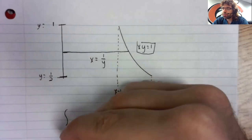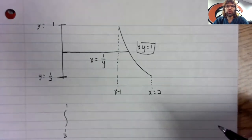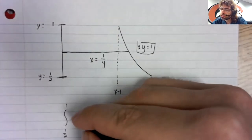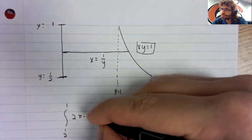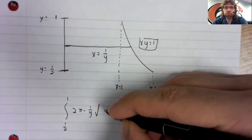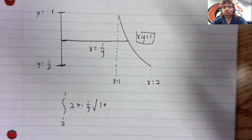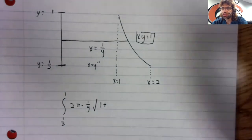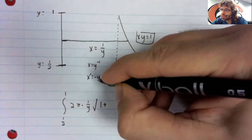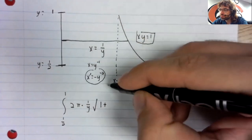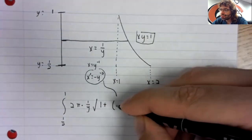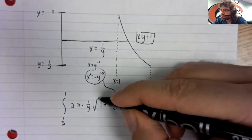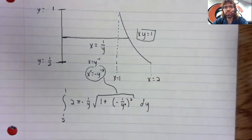So the integral from one half to one of two times pi times this distance times the square root of one plus the derivative. So x equals y to the negative first. The derivative is negative y to the negative second, which is negative one over y squared.